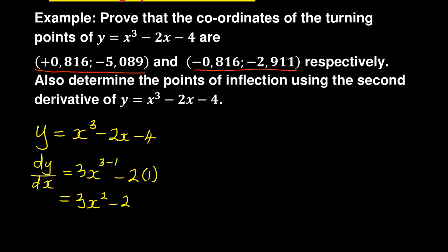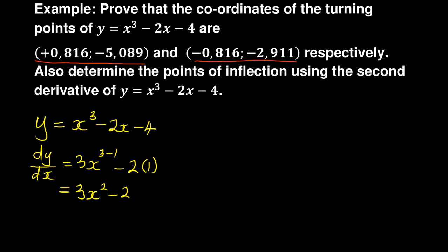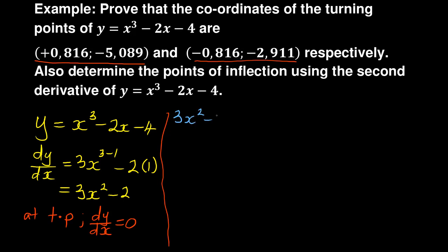That is the first part. The next thing you need to know is that at the turning point, dy/dx is equal to 0. So you can write: at TP, dy/dx = 0. Therefore you set 3x² minus 2 equal to 0, and solve for x. That gives 3x² = 2.